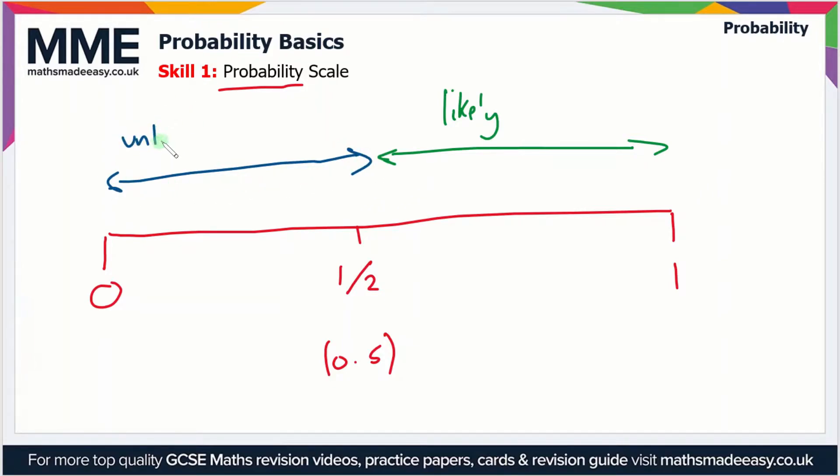Let's do a couple of examples. We could say that the probability that it will rain tomorrow is 65 percent. So 65 is 0.65, that's roughly here, so this would be likely to happen.